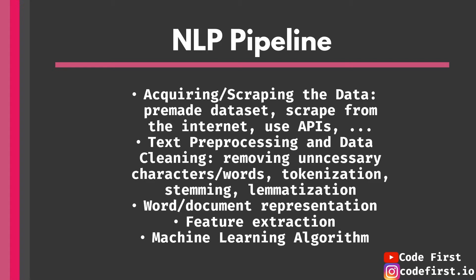After pre-processing your data — getting it, cleaning it, making it ready — you start with word and document representations. This means taking normal text words and transforming them into something numerical: vectors, feature vectors, feature extraction. Each word is turned into a math vector that the computer can understand. These feature vectors are fed into a machine learning algorithm that trains on this data and produces results — a classifier or trained model — and from that you have an AI application. This is basically how the pipeline works.